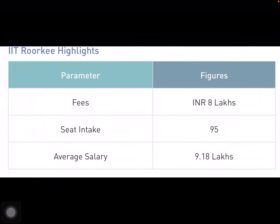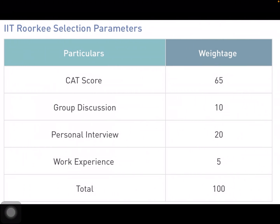For IIT Roorkee: fees are 8 lakhs, seat intake is 95, and average salary is 9.18 lakhs. Their selection parameters give maximum weightage to CAT score, group discussion is 10, personal interview is 20, and work experience is 5. Notably, IIT Roorkee does not give weightage to your 10th, 12th, or graduation performance, so if you didn't score well in those, IIT Roorkee is the call list to look out for.